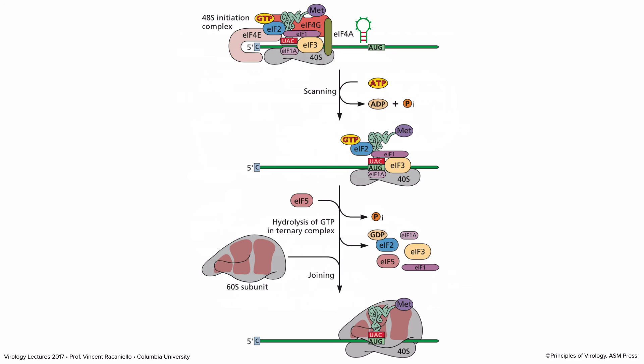Eventually the complex reaches the AUG. The met-initiator tRNA has the right anticodon to match the AUG, and that base pairing is sensed, leading to the release of many initiation proteins and hydrolysis of the GTP on the ternary complex. The 60S subunit then joins, giving an 80S ribosome with the tRNA-met at the initiation site, ready to make protein. The 60S subunits join only when a 40S and a tRNA find an initiation codon.